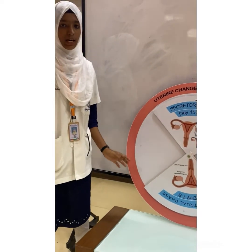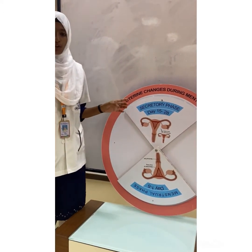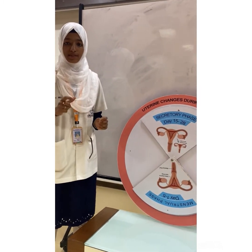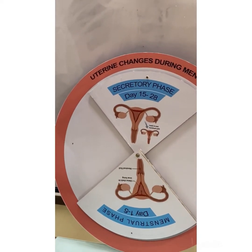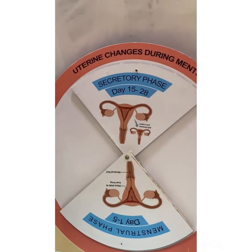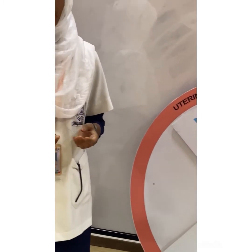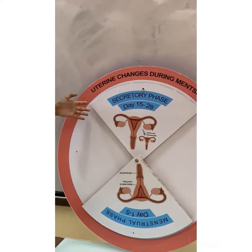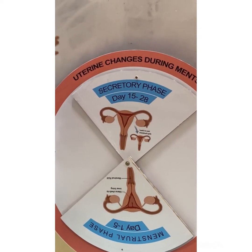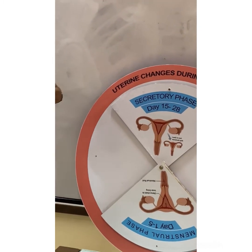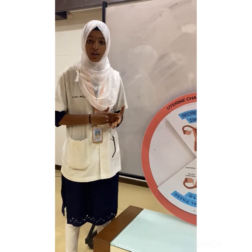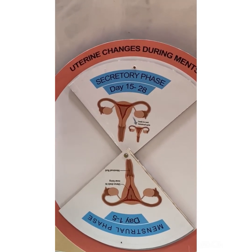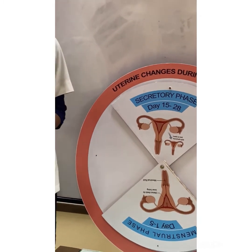Now I will explain about the changes taking place in the endometrium wall during the secretory phase. Because of the increase in production of progesterone and estrogen, the glands present in the endometrium wall become increased in size, and the blood supply to the endometrium wall is increased. The stromal cells become increased in size due to accumulation of glycogen and lipids. The thickness of the endometrium wall reaches up to 6 mm, which helps in the implantation of the embryo during pregnancy. If fertilization occurs, the embryo will be implanted in the endometrium wall. If it does not, then the endometrium wall will be shed off during the next menstrual cycle.